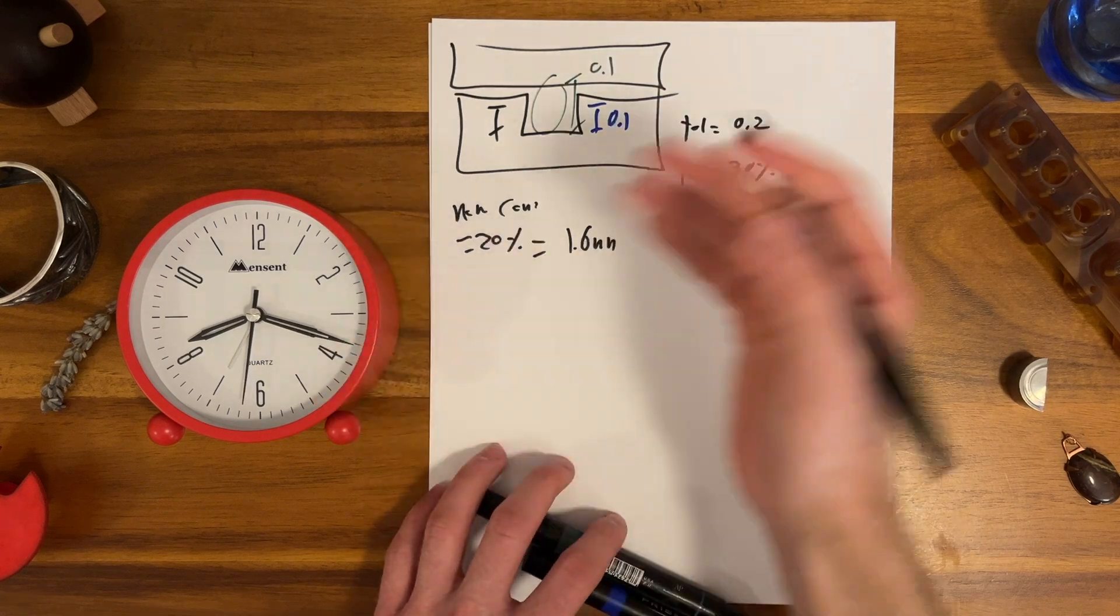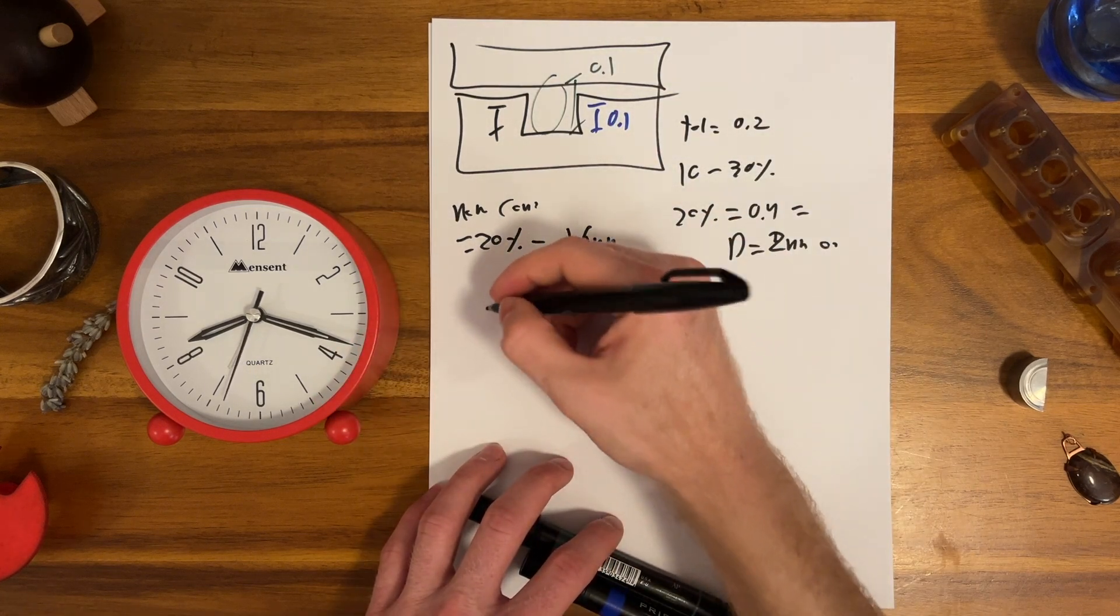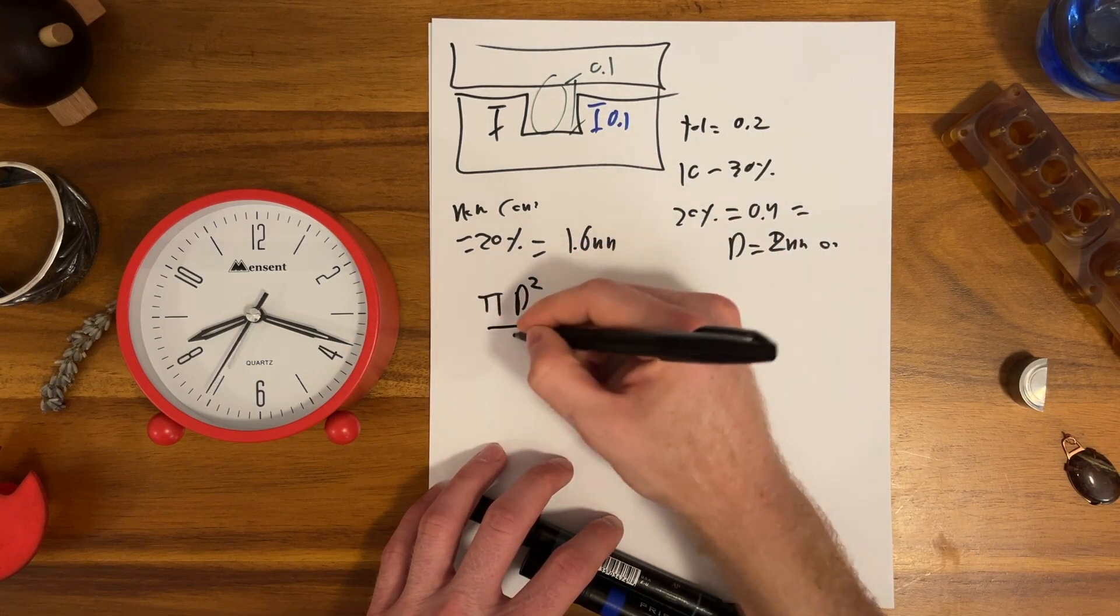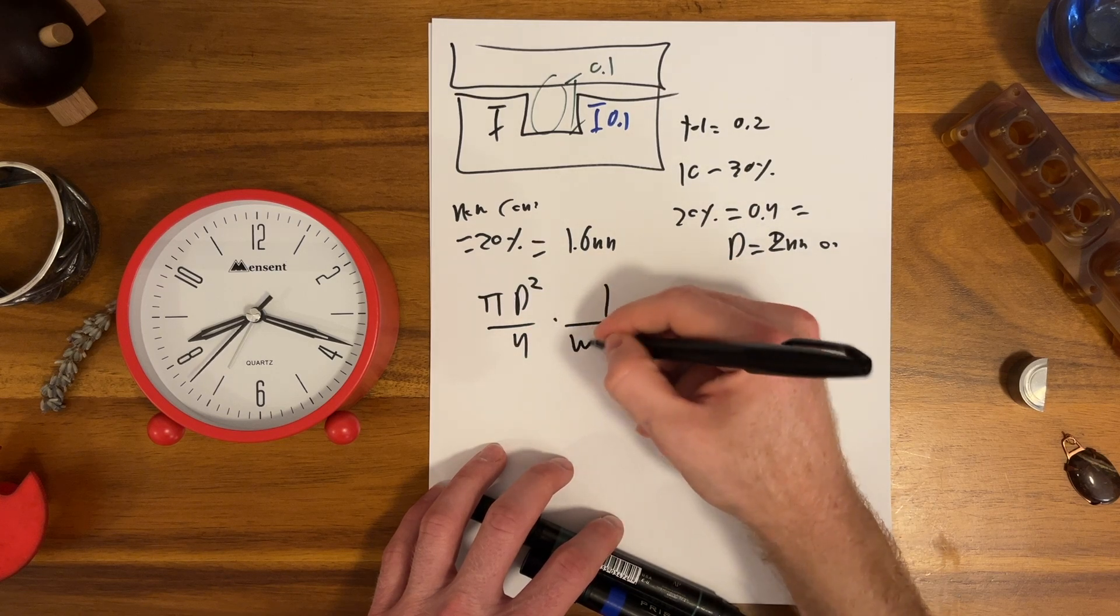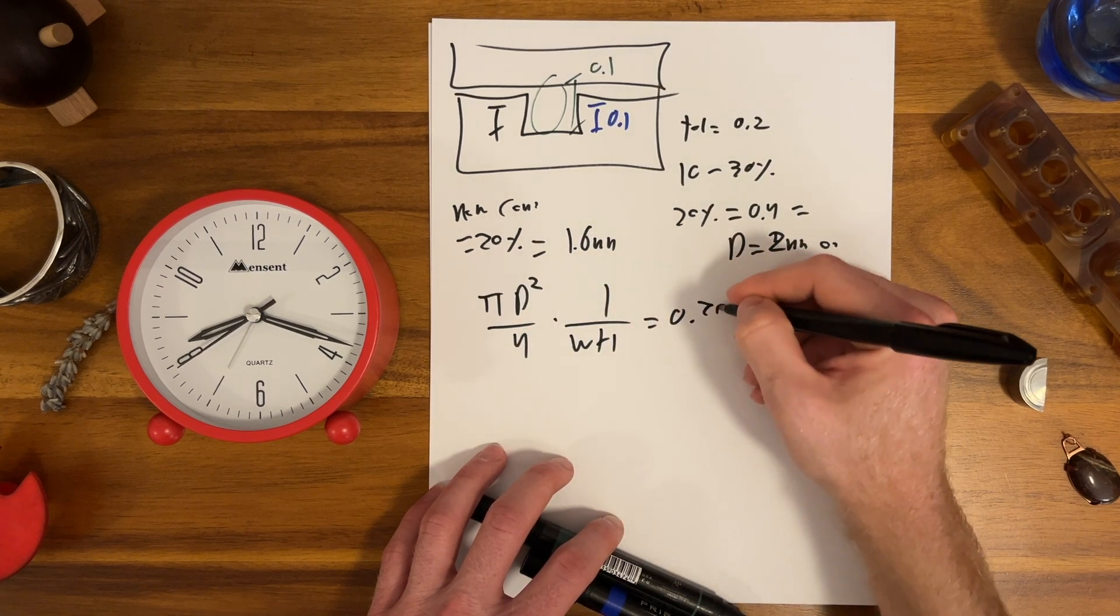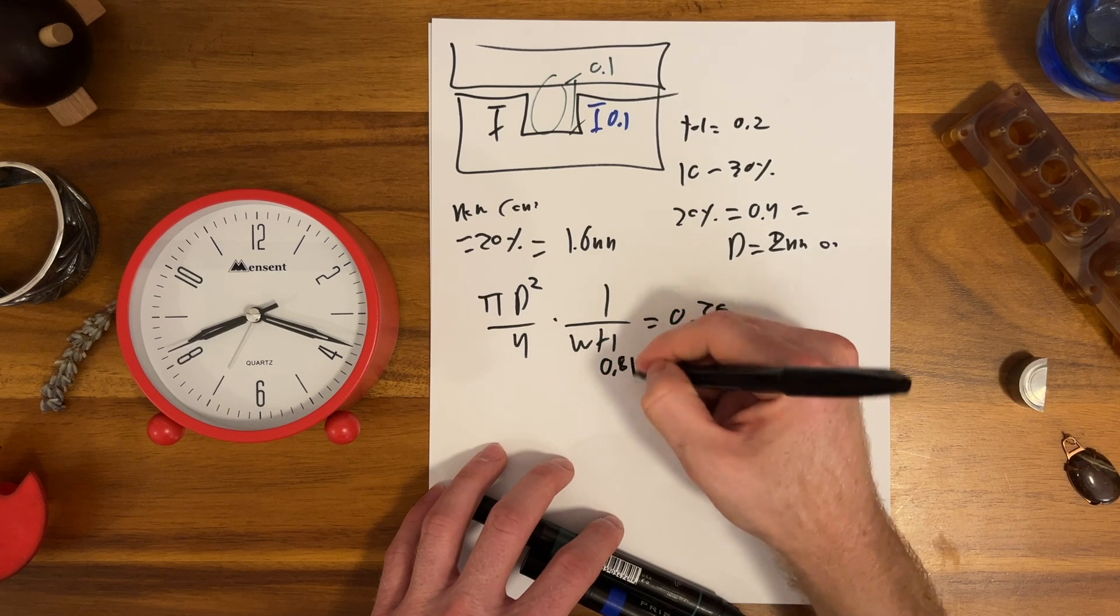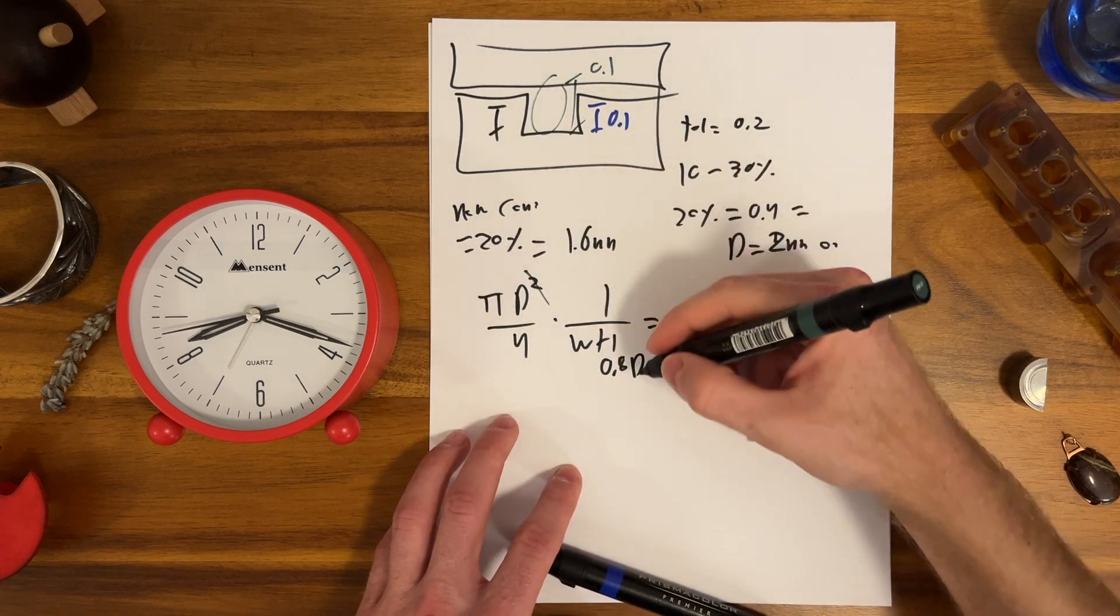That's h and we need to hit 75 percent fill factor. So we know that we have pi d squared over four times one over wh equals 0.75. Well, h is actually just 0.8 times d squared and d cancel.